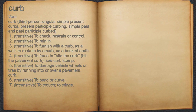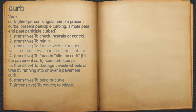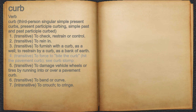7. Curb. Verb. 1. Transitive: to check, restrain, or control. 2. Transitive: to rein in. 3. Transitive: to furnish with a curb, as a well; to restrain by a curb, as a bank of earth. 4. Transitive: to force to bite the curb; hit the pavement curb. See curb stomp.